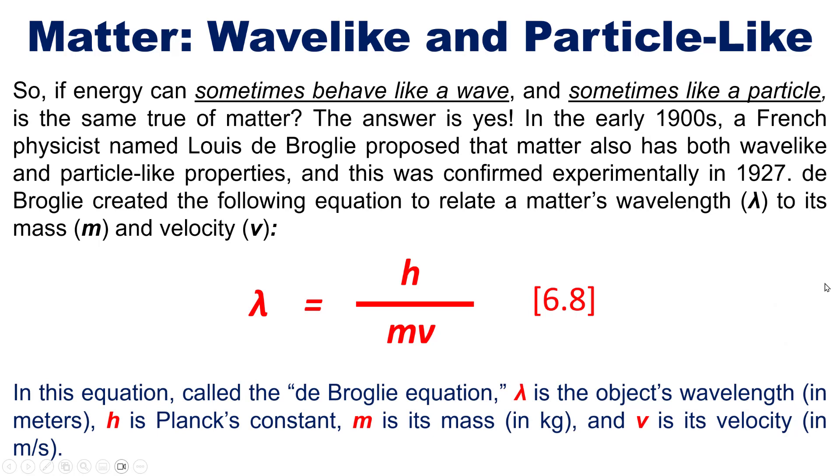In this equation called the De Broglie equation, this lambda here is the object's wavelength in meters. This term up top is Planck's constant, which I showed you earlier.